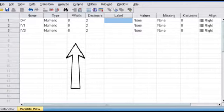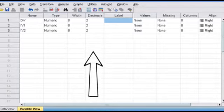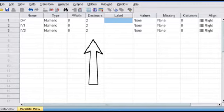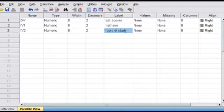The width column is set to eight. All that means is that each time you type into a box, you're allowed eight characters. The decimals column, which is set to two, means that all of the numbers that you type in will be up to two decimal places. There's no need to change this unless you feel necessary. In the label column, this is where you can actually name your DVs and IVs. So remember, our DV is test scores. Our IV1 is mathene, or amount of mathene that each participant received. And IV2 are the number of hours that they studied.